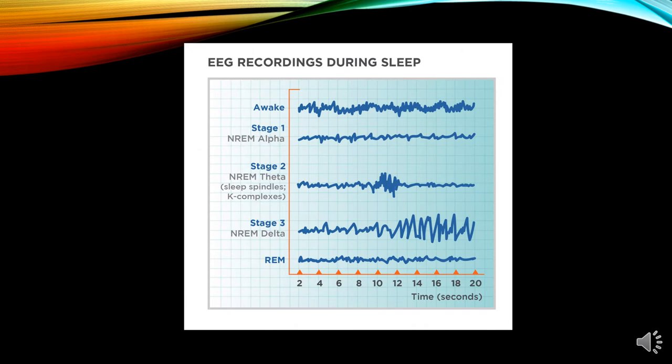Brain wave activity varies from the first stage to the fourth stage. Machines such as EEG are available to record brain waves during sleep. There are different frequencies and amplitudes of these waves. For example, when a person is awake, the frequency is 15 to 50 Hz and the amplitude is less than 50 microvolts.